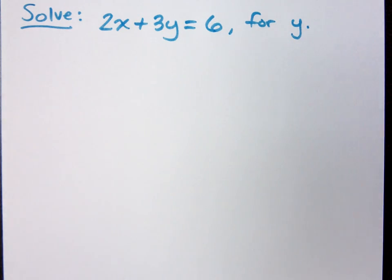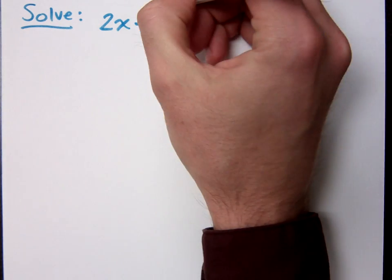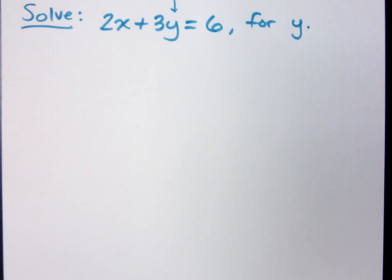So if I give you 2x plus 3y equals 6, and I say solve this guy for y. When I say solve for y, that means get y completely by itself. So here's my y right here. I want to get this guy alone.